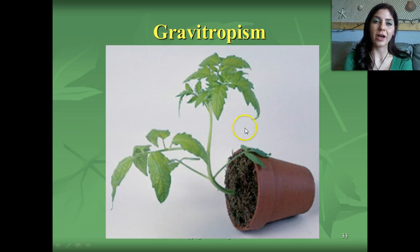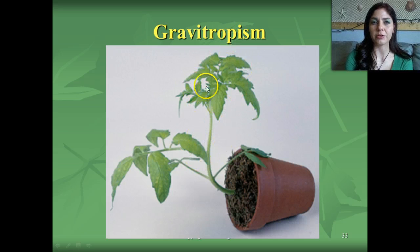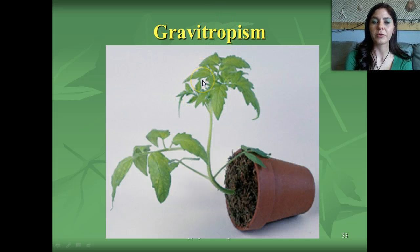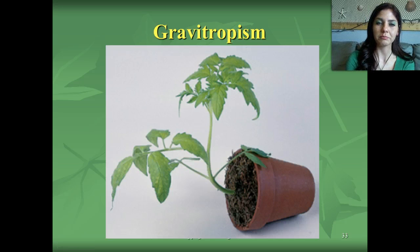Gravitropism again has two different types: positive and negative. We have the positive effects of gravitropism when you observe the leaves and stems of the plant growing away from the source of gravity, or against it. The roots of the plants are still growing down with the force of gravity, and that's an example of positive gravitropism.